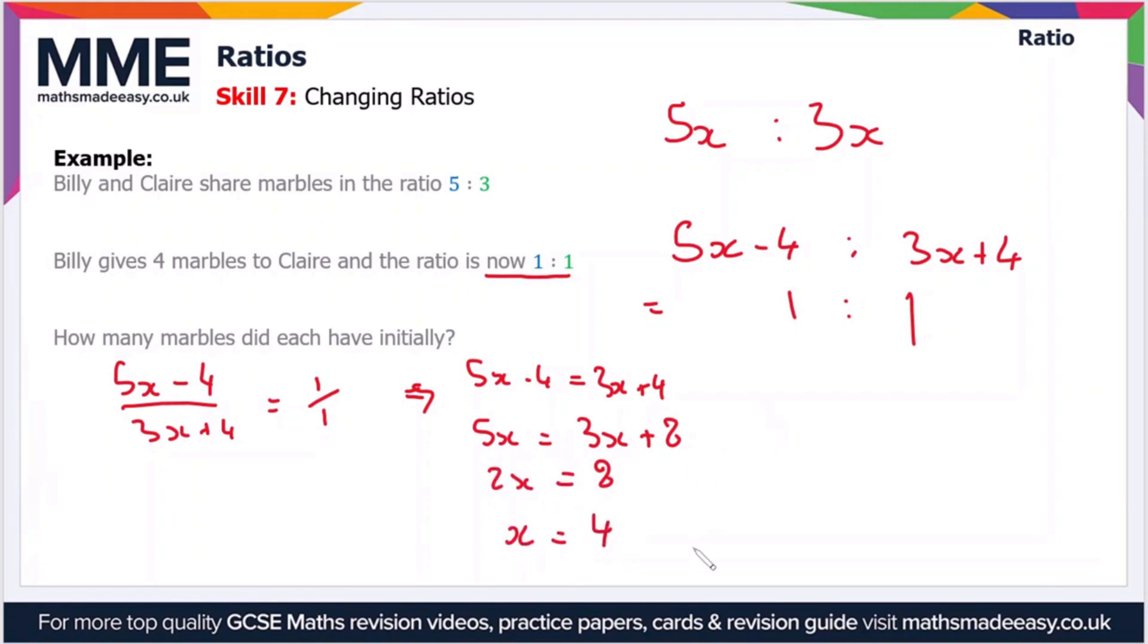So if we bring this working up to here all we have to do now is substitute in this value of x to the initial expression or the initial ratio which is 5x to 3x. So 5 times x is 20 and 3 times x is 12.